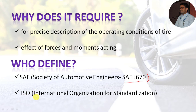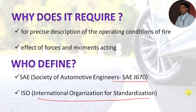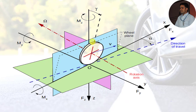The second organization which has defined the tire axis system in the same manner is ISO, which stands for the International Organization for Standardization. This figure indicates the typical tire axis system prescribed by SAE and ISO, and here we can consider this as the front right-hand side tire. We are going to see each terminology step by step.